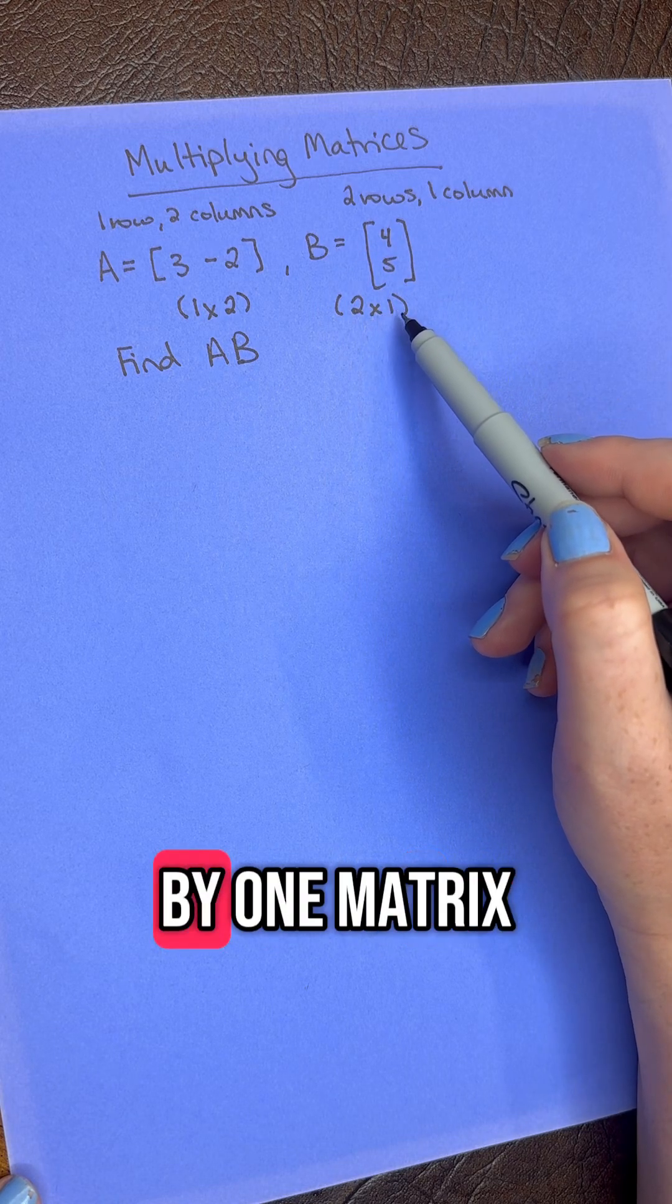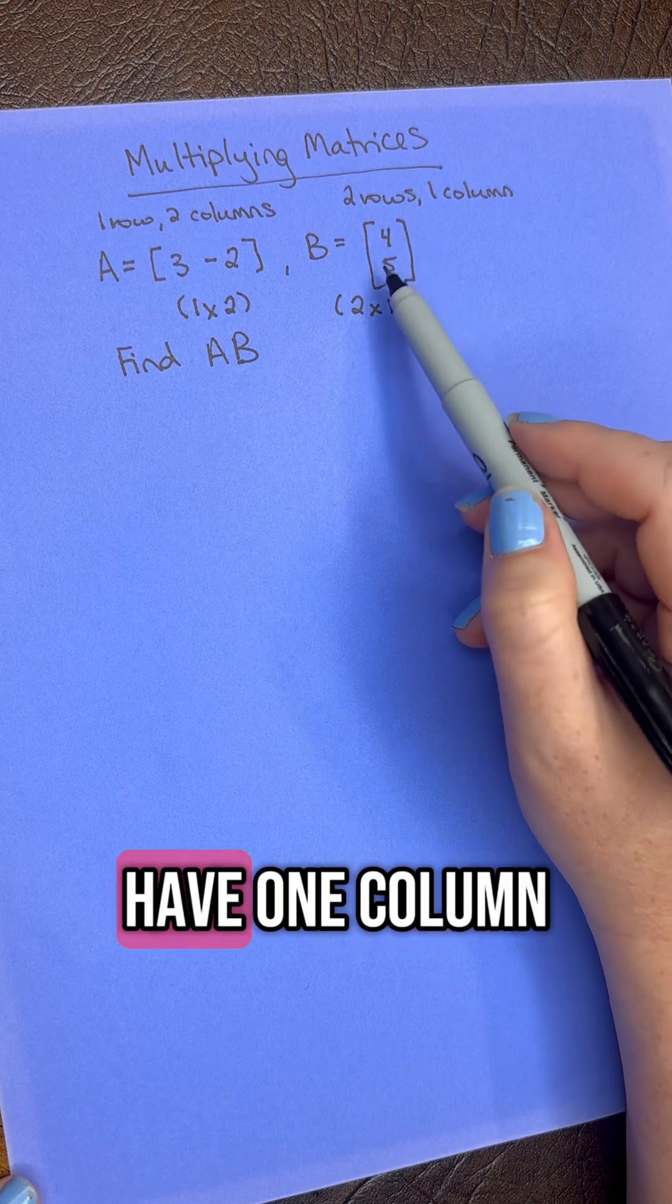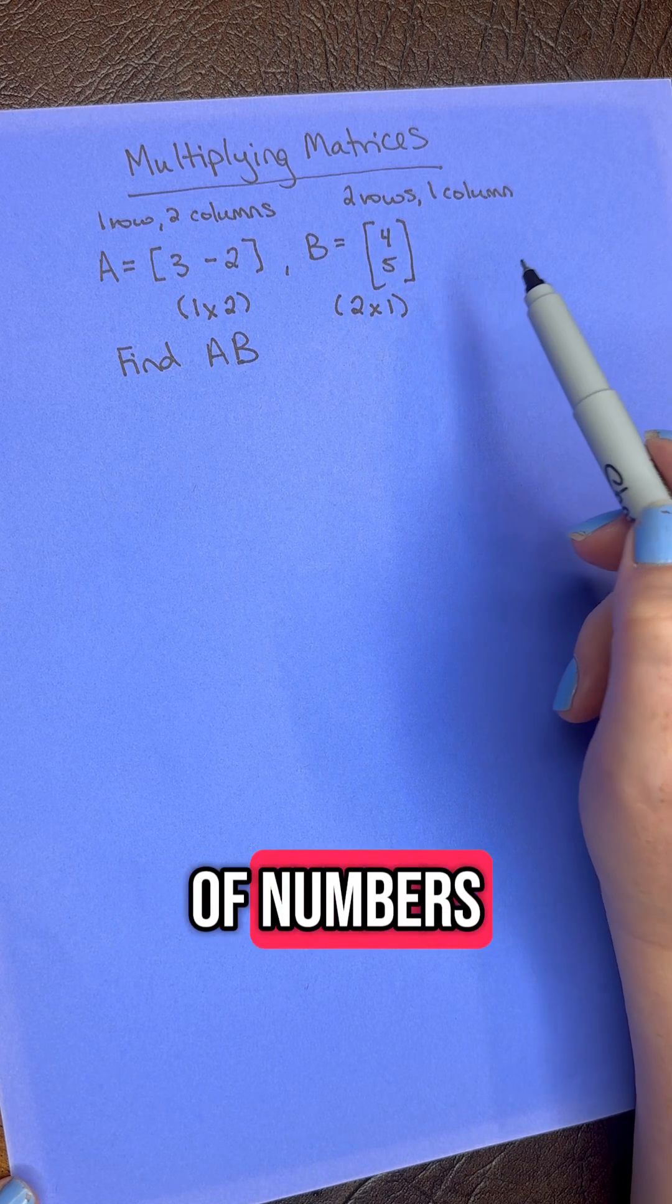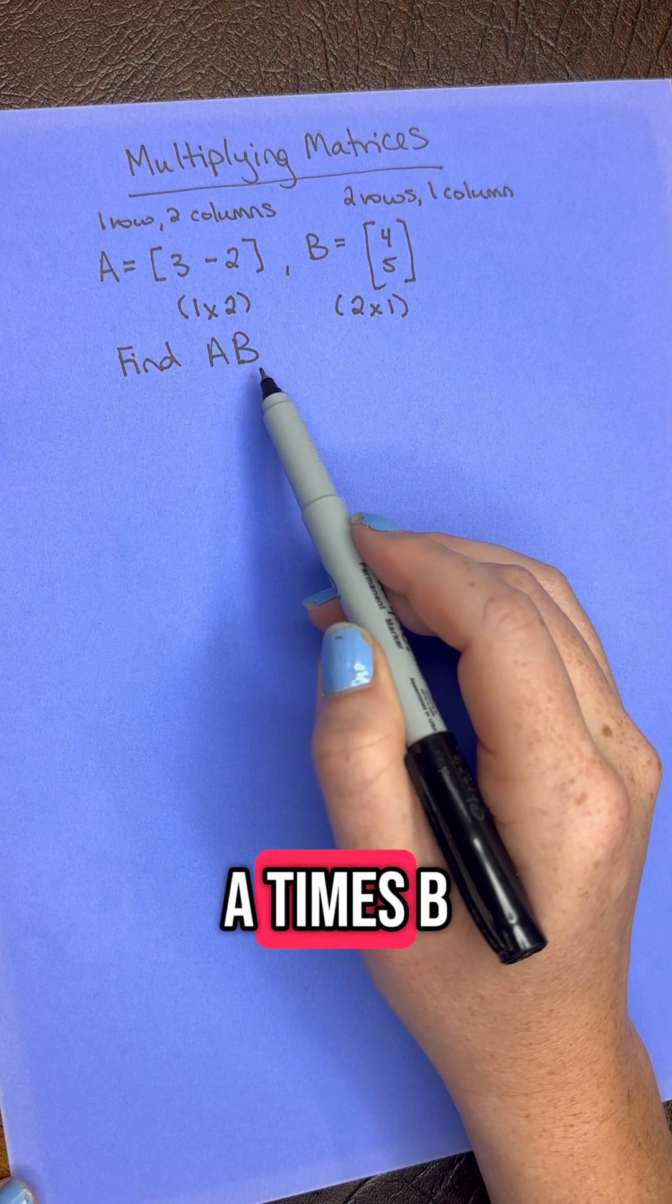we have a 2 by 1 matrix because we have two different rows of numbers, but we only have one column of number. So here we need to find A times B.